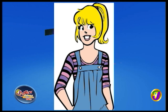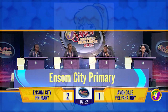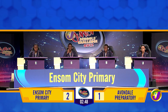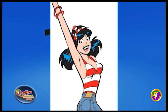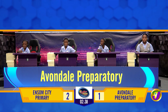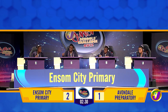Ensom City — Television visual question: look at the monitor and identify the cartoon character. Winnie Smith. Incorrect — Betty from Archie. Television visual question for Avondale: look at the monitor and identify the cartoon character. Simon. Incorrect — Veronica from Archie.